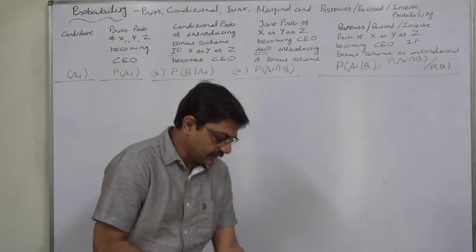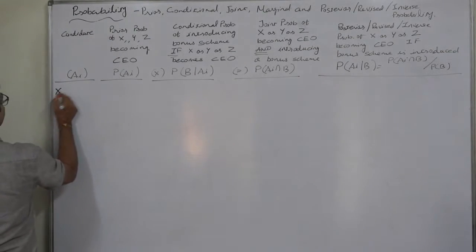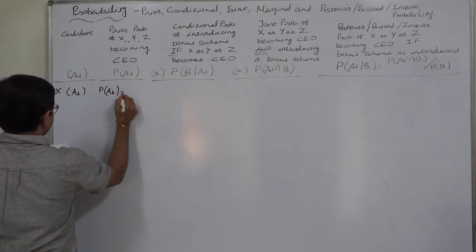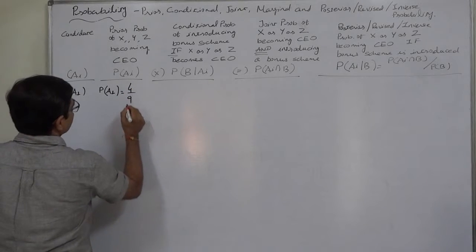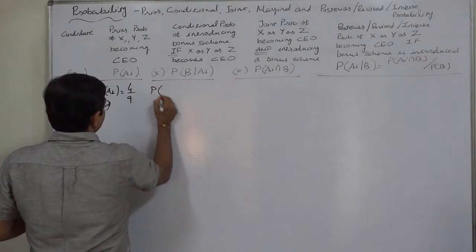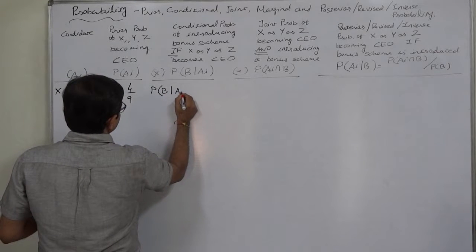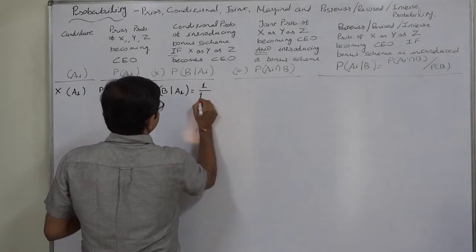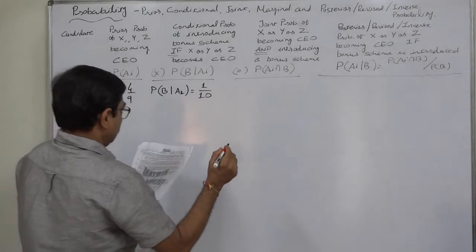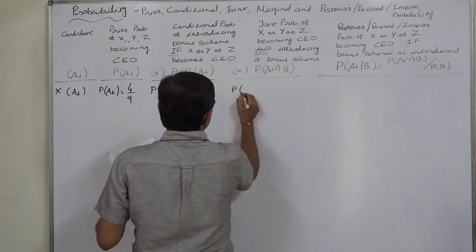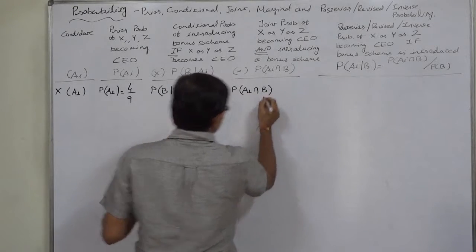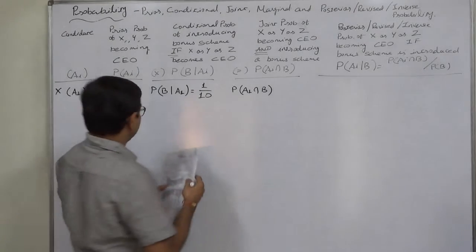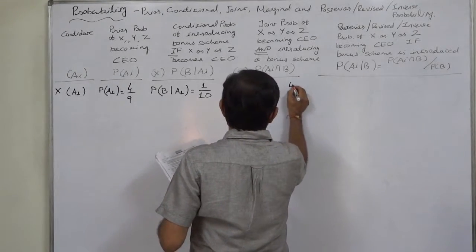For the first candidate X, we use the sign A1. Probability of A1 is 4 by 9. The conditional probability of introducing a bonus scheme if X becomes CEO — that is P(B|A1) — is given to be 1 by 10. If we multiply these two, we get P(A1 ∩ B), meaning X is selected and a bonus scheme is introduced: 4 by 9 into 1 by 10, that is 4 by 90.